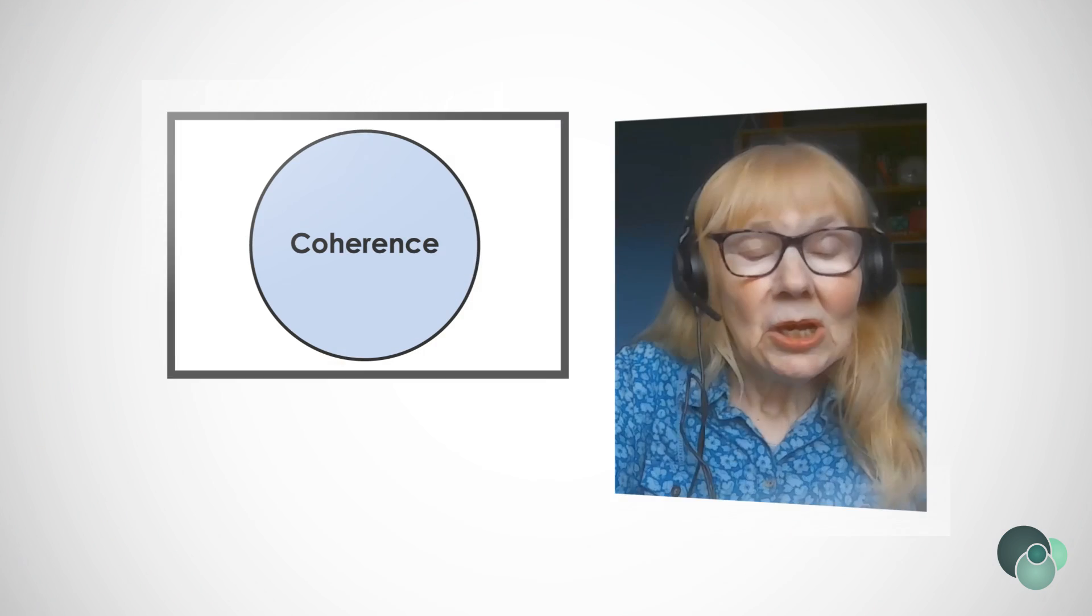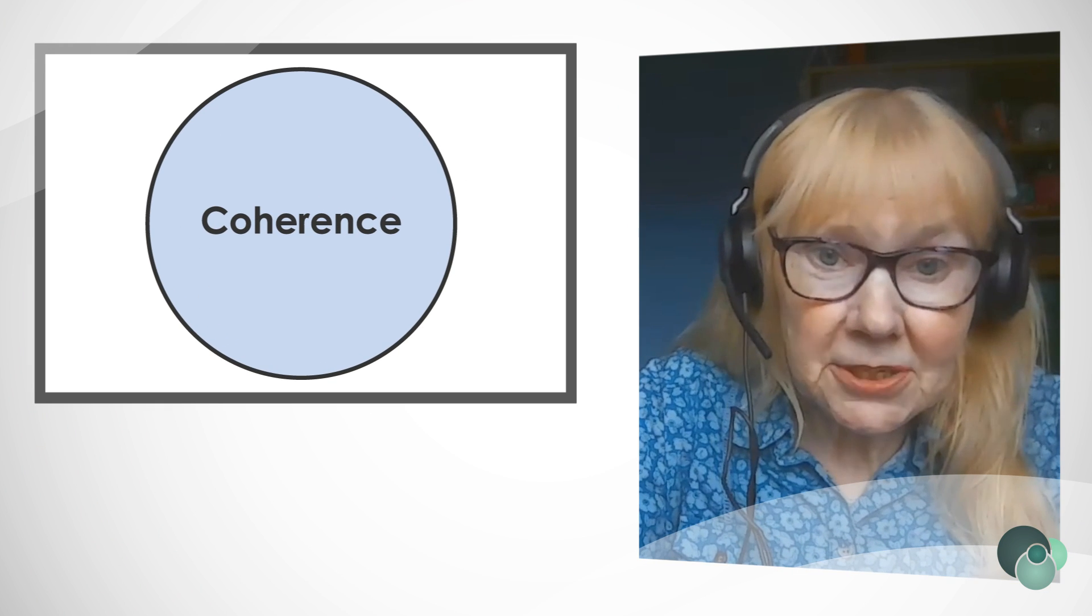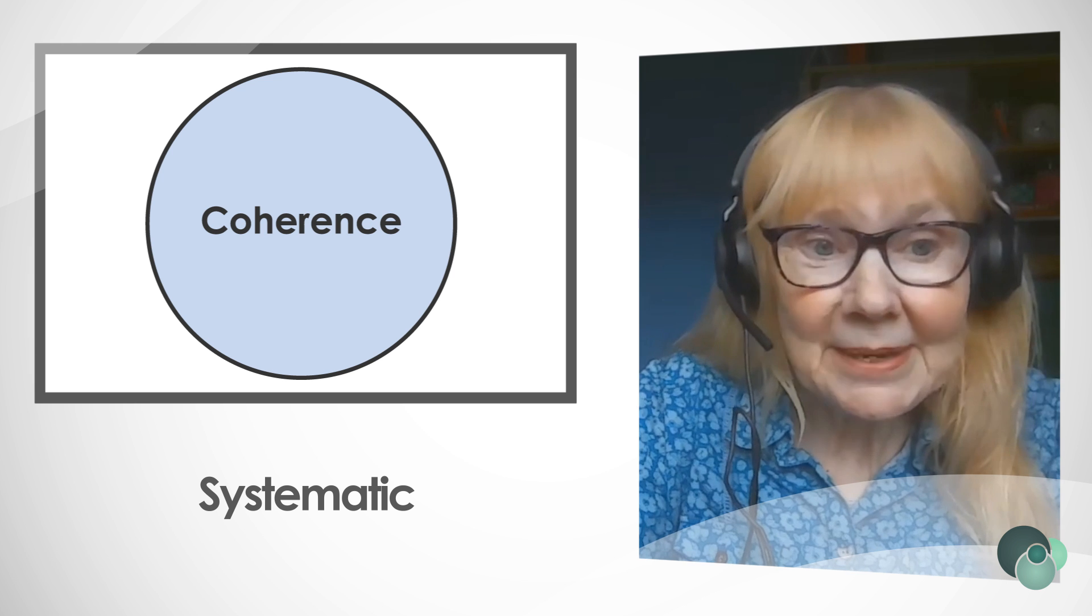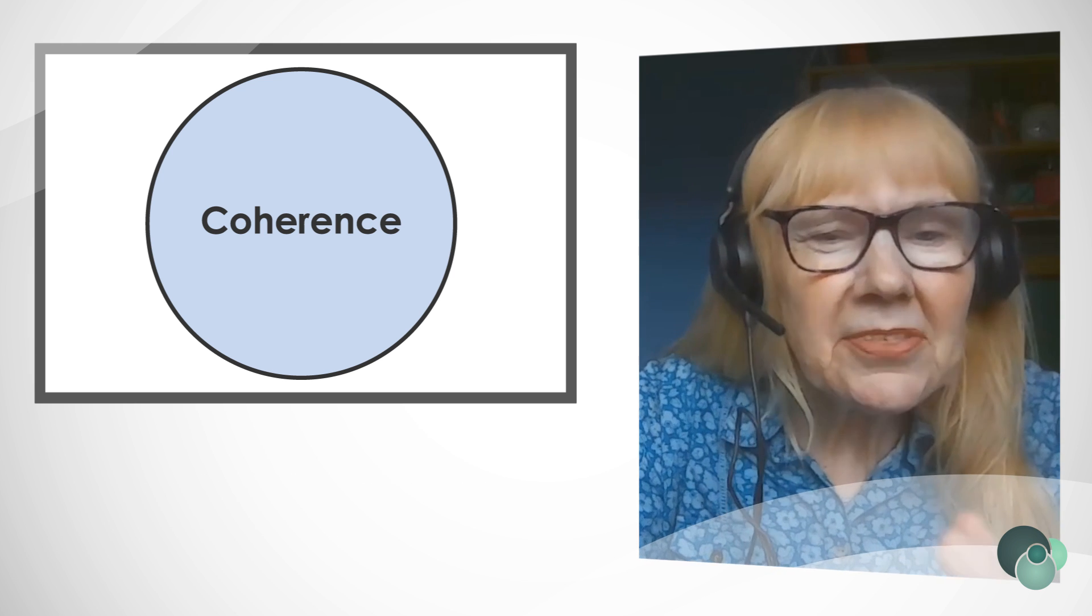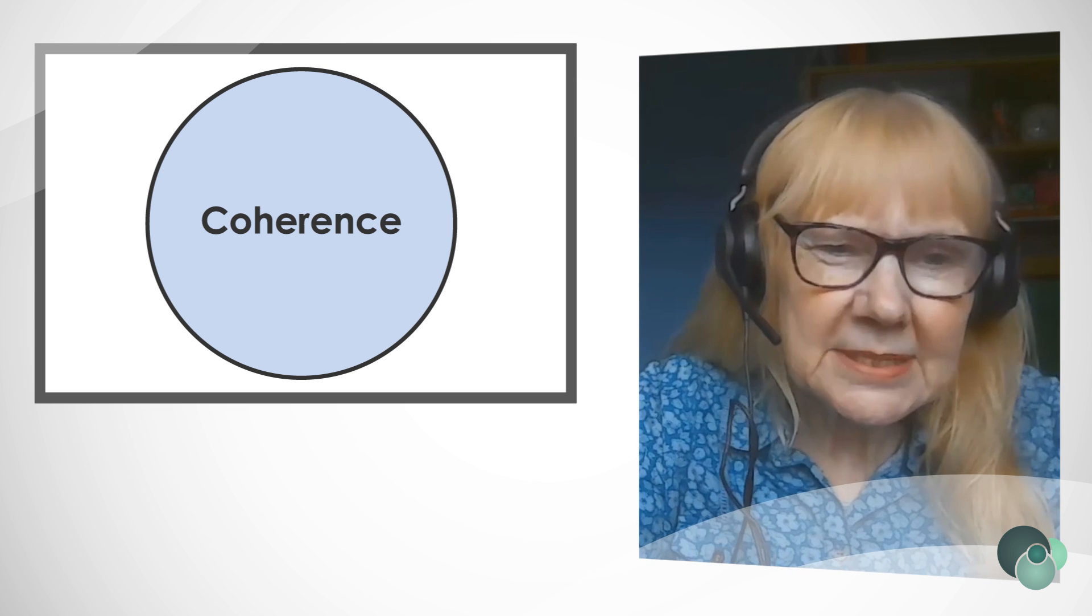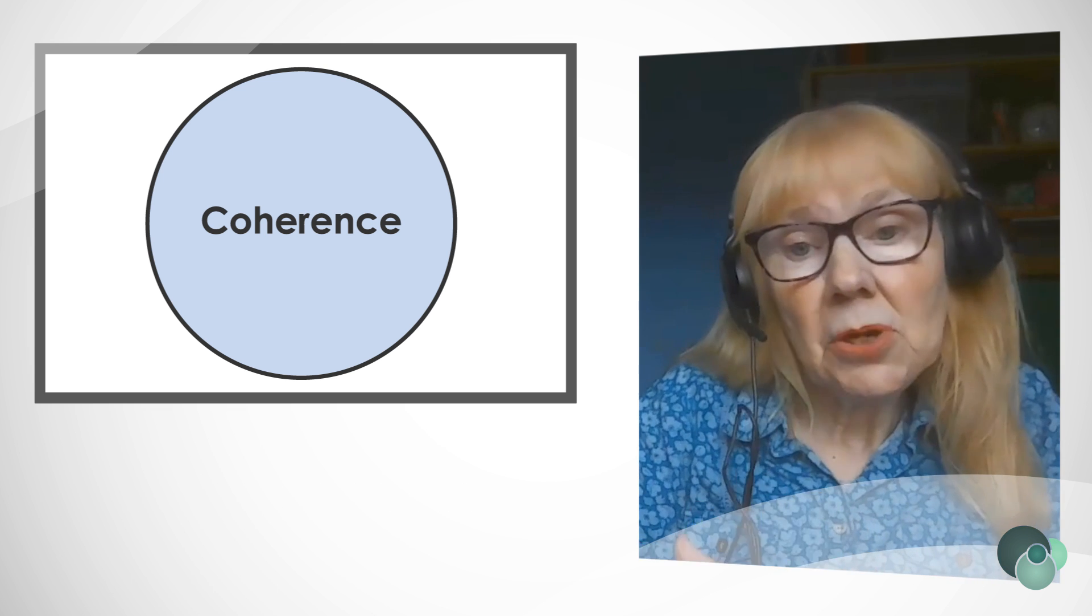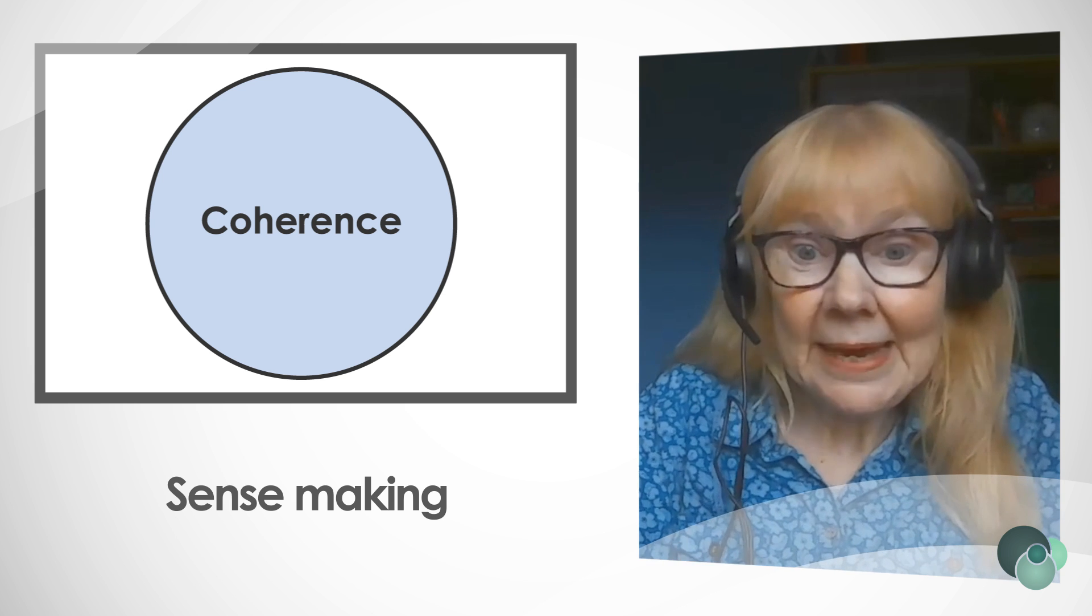If we take a dictionary definition, coherence is seen as a systematic or logical connection or consistency. I think there's two key elements: one is the order is important because that supports sense-making.